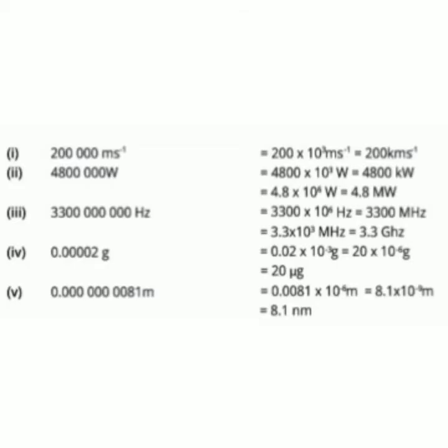Look at this first example. It is 200,000 meters per second. Instead of writing all these zeros, we can write it as 200 kilometers per second. Three zeros can be written in the form of 10 to the power 3. And we know that 10 to the power 3 stands for kilo. So it will become 200 kilometers per second.